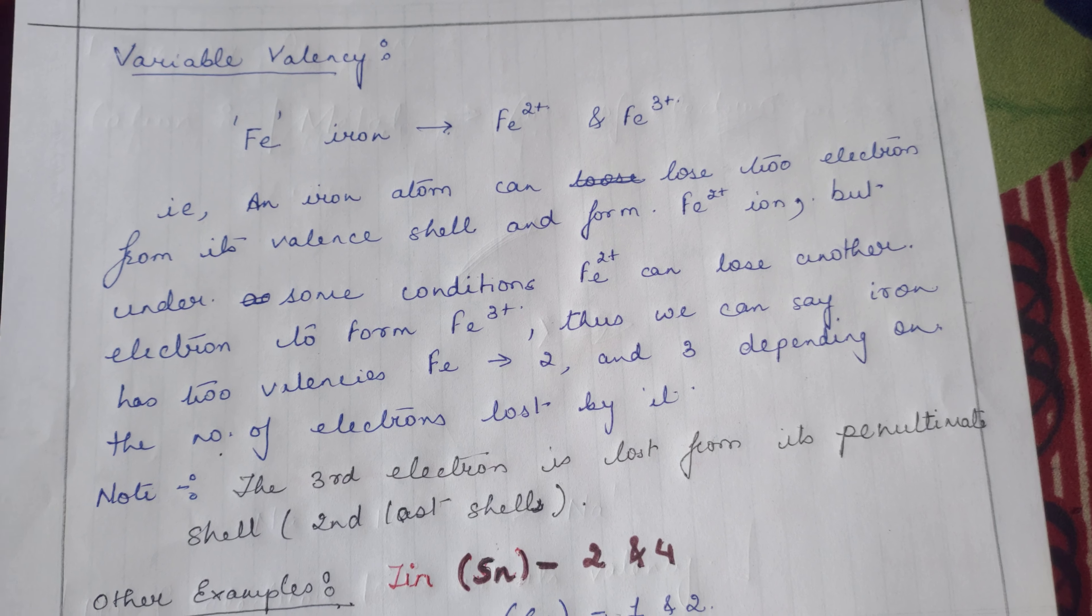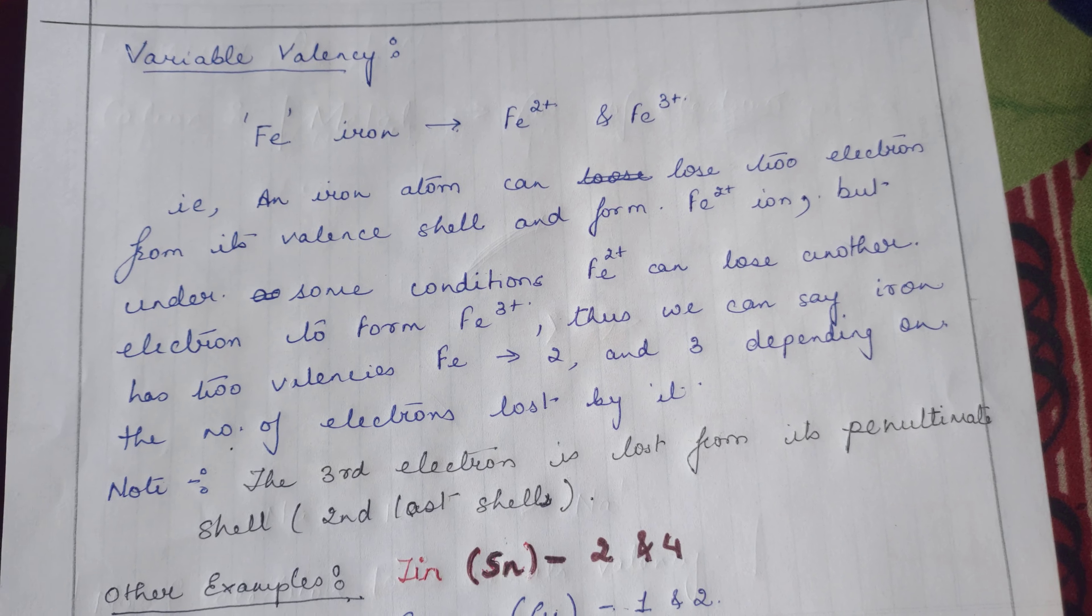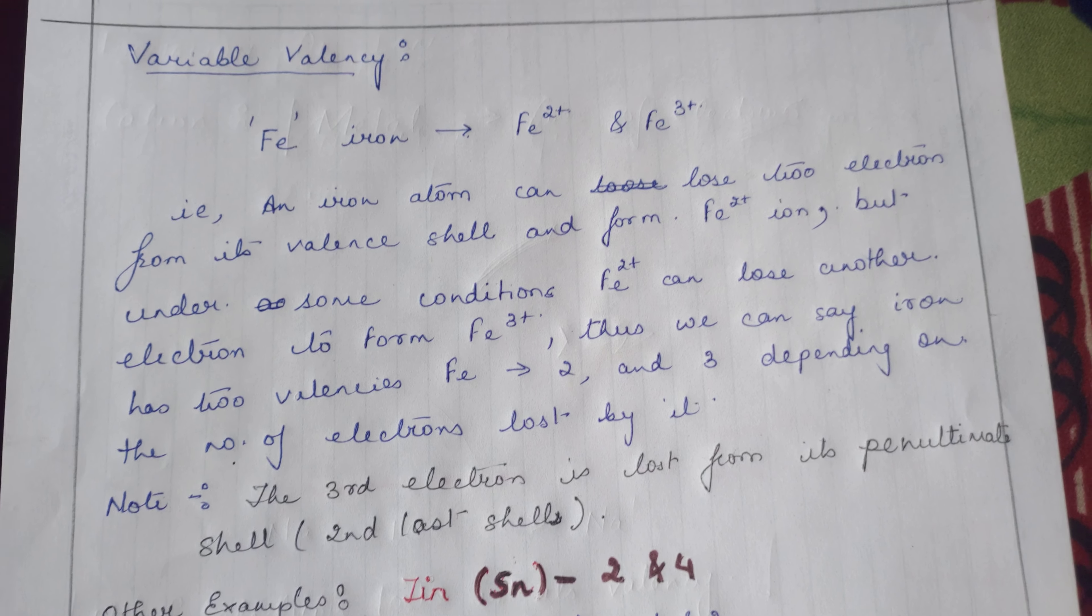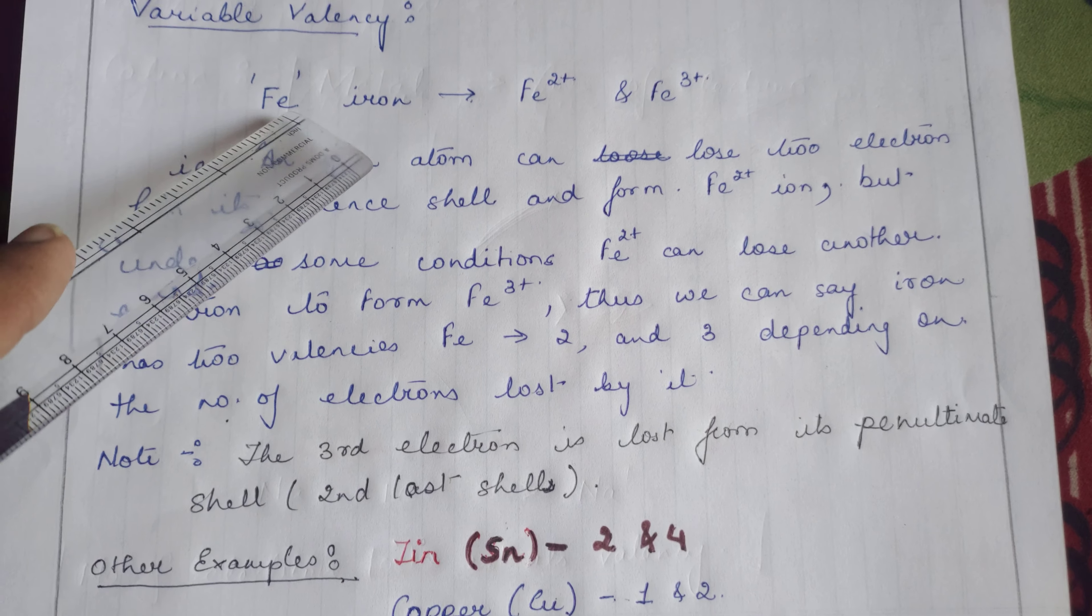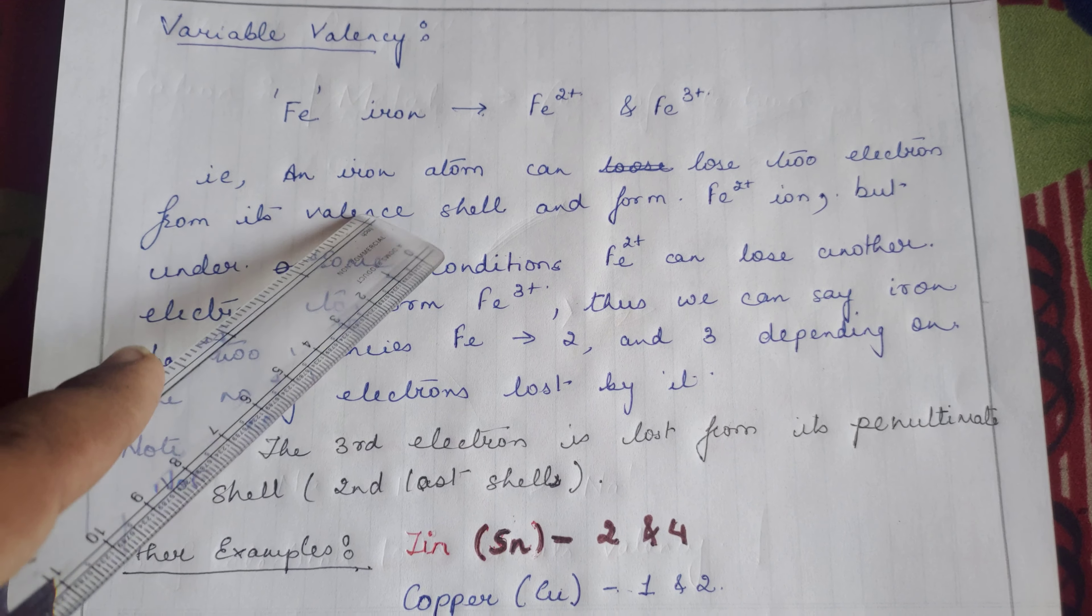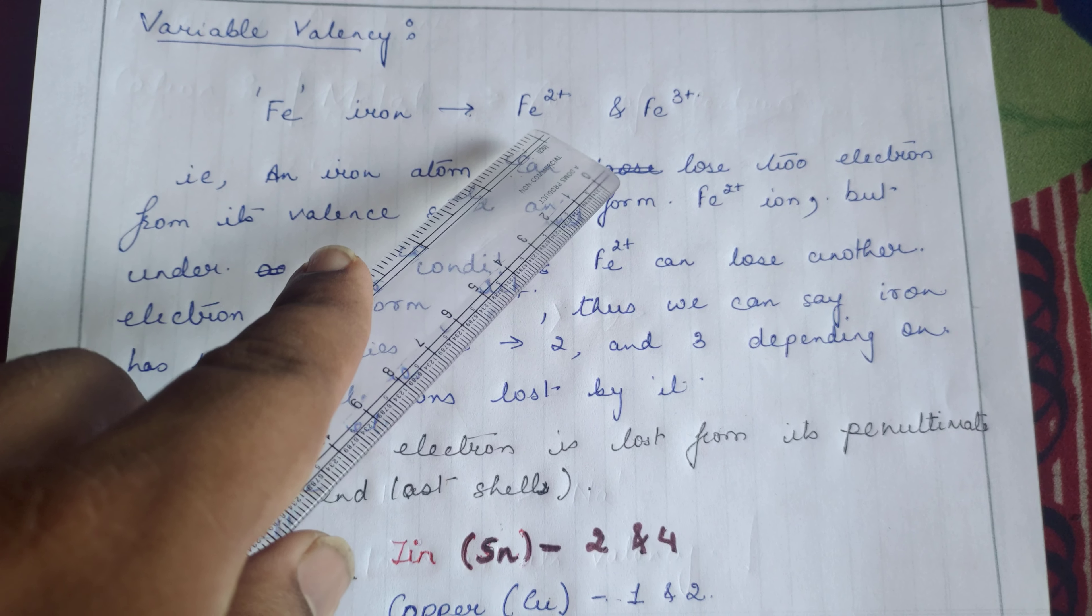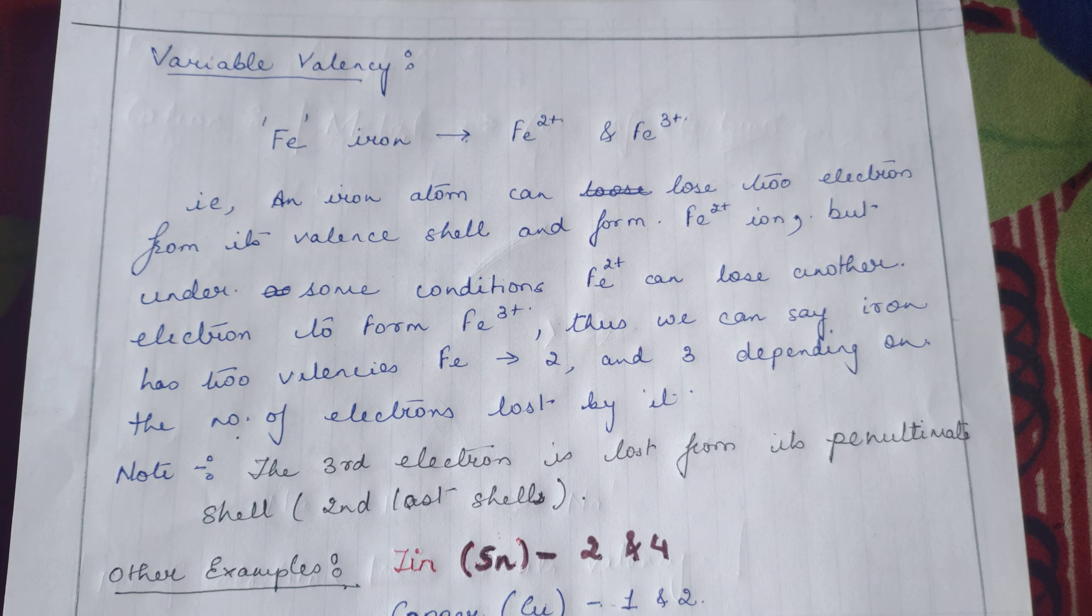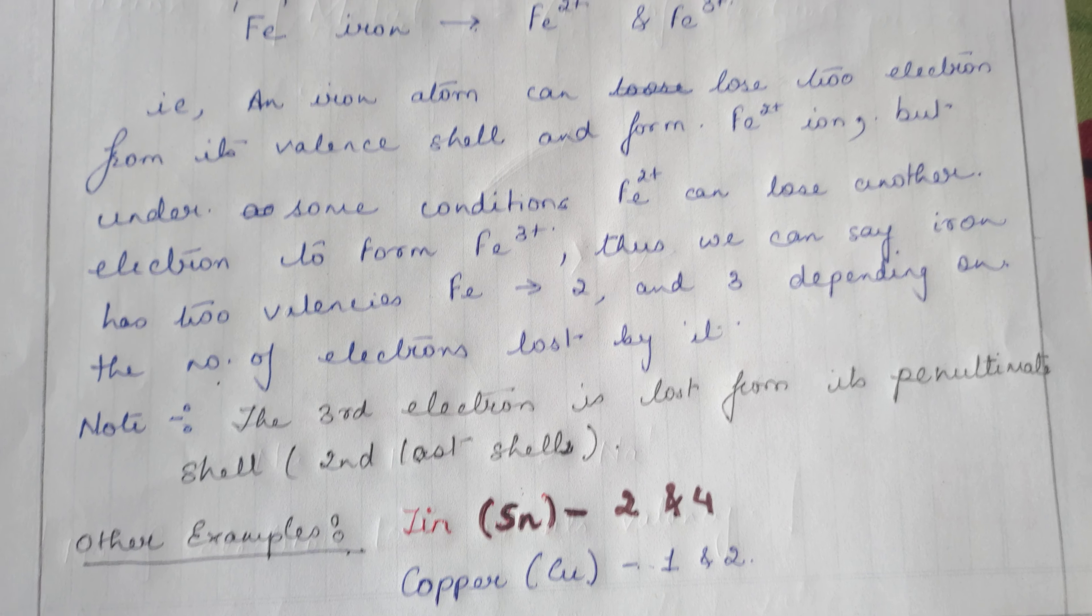Generally, most elements have just one valency. But under certain conditions, an element may lose more electrons from the valence shell than present in it. Such a condition will create variable valencies. To explain variable valency, let's take an example of iron. Iron generally has two electrons in its valence shell, but under adverse conditions it can lose either two electrons or three electrons, respectively forming Fe2+ and Fe3+. Such a situation is called variable valency.